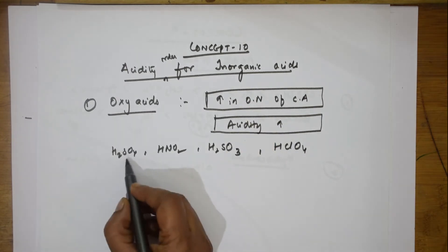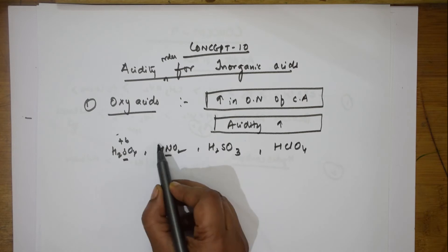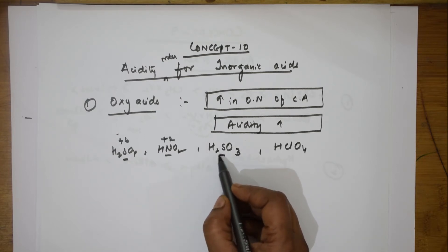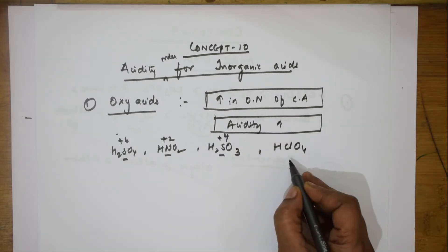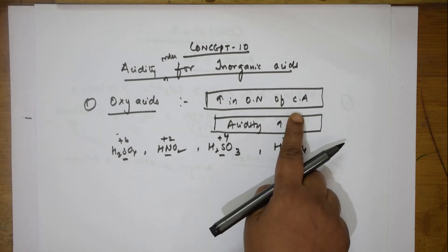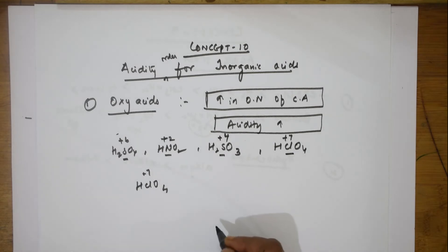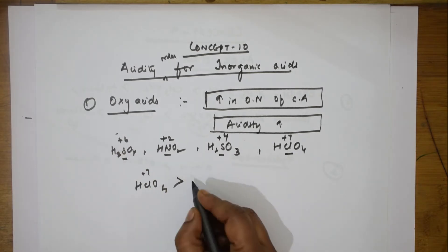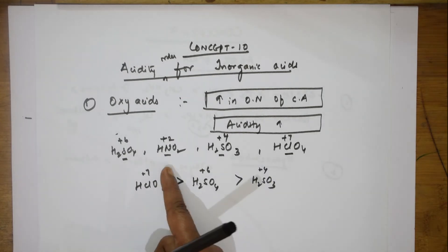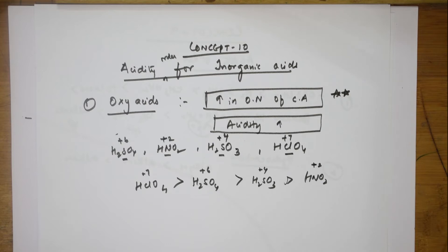Higher the oxidation number of the central atom, greater is the acidity. Among all these central atoms, HClO4 has the maximum oxidation state (+7), so HClO4 is the most acidic. Next is H2SO4 with +6, which is greater than H2SO3 with +4, and the last is HNO2 with +2. So the order is: HClO4 > H2SO4 > H2SO3 > HNO2. Higher the oxidation number of the central atom, greater is its acidity.